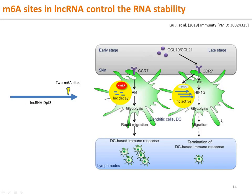Just as m6A is a determinant of mRNA decay, m6A can regulate lncRNA stability. In dendritic cells, CCR7 chemokine receptor activates m6A demethylation in lncRNA DPF3 and prevents lncRNA DPF3 from degradation. lncRNA DPF3 inhibits hypoxia-induced factor HIF1, glycolysis, dendritic cell migration to lymph nodes, and termination of dendritic cell-based immune response.